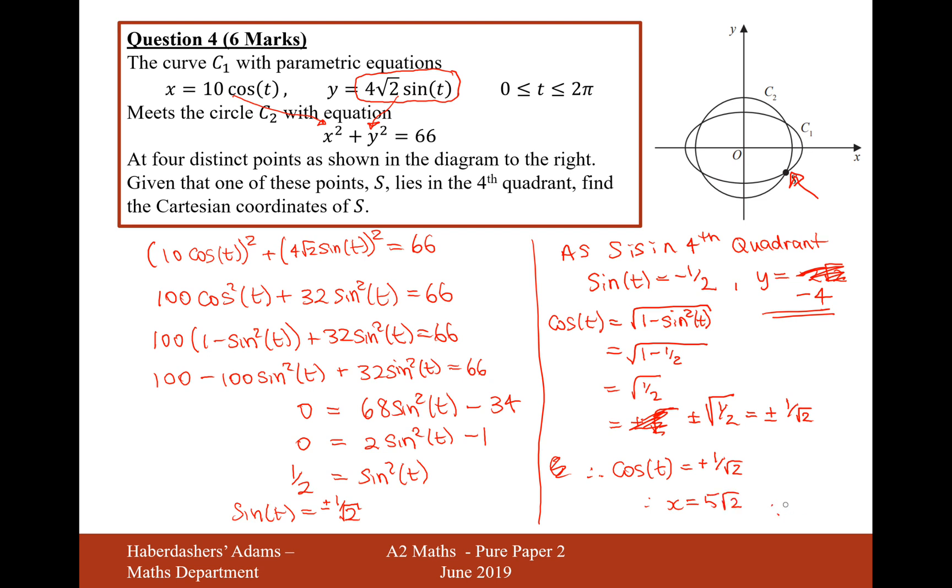So therefore, the coordinate s is equal to 5 root 2, minus 4.